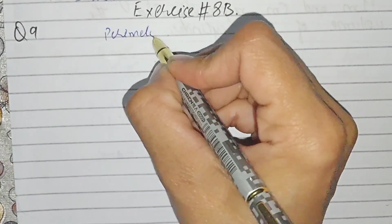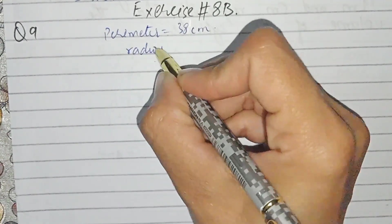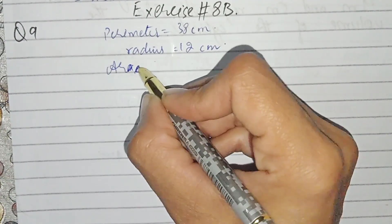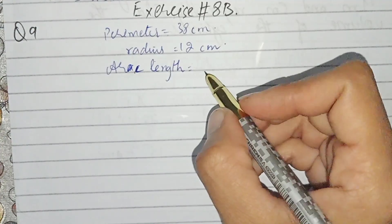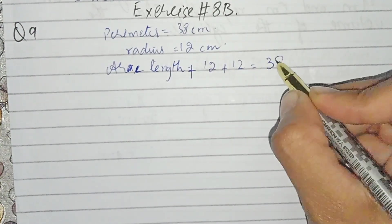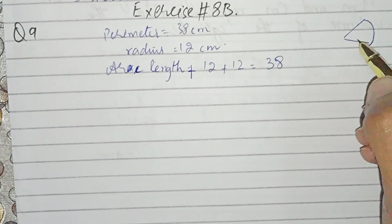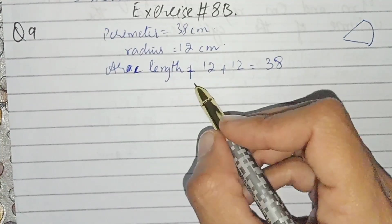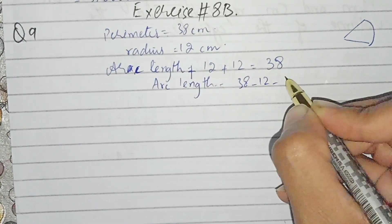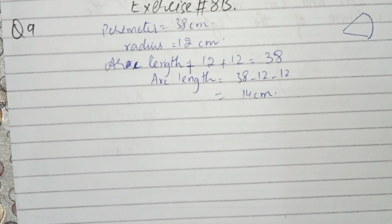The perimeter is 38 centimeters and the radius is 12 centimeters. The perimeter equals the arc length plus 12 plus 12. By subtracting: 38 minus 12 minus 12, we get the arc length is 14 centimeters.